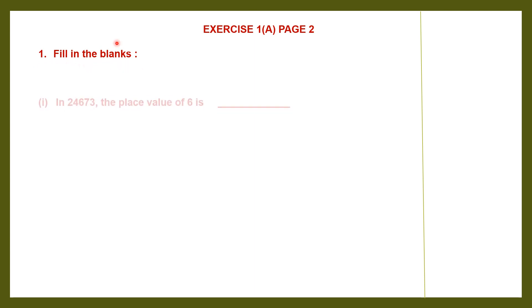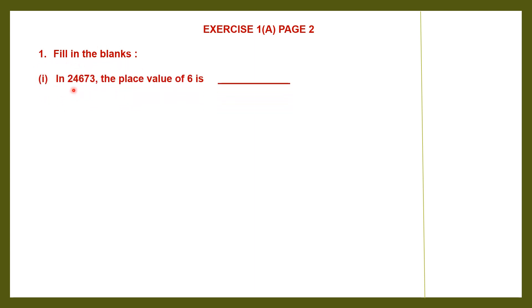Exercise 1A is on page number 2. Let's begin with question 1, fill in the blanks. First sentence: in this number — how do we read the number? 24,673 — the place value of 6 is... So let's do a quick review of what place value is.